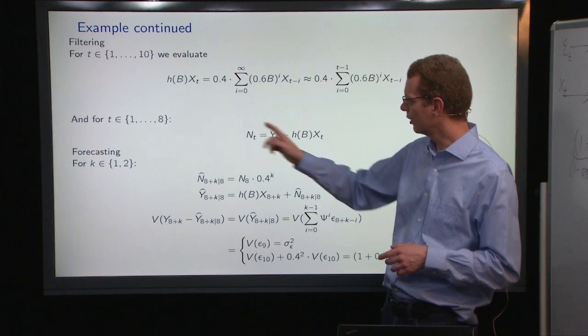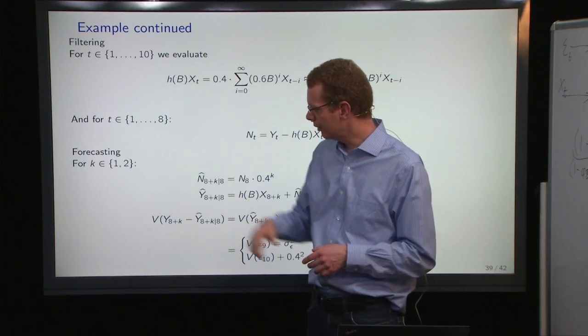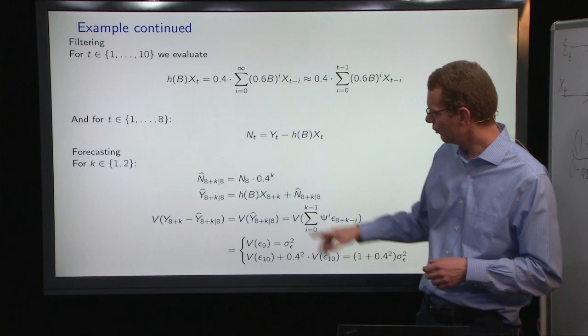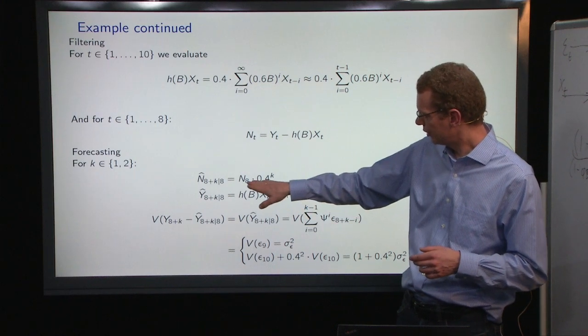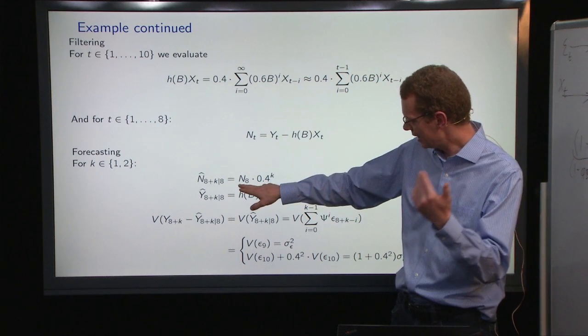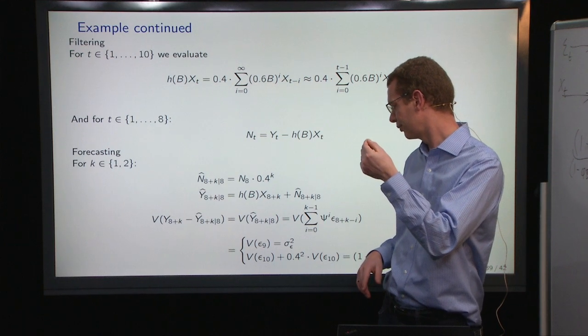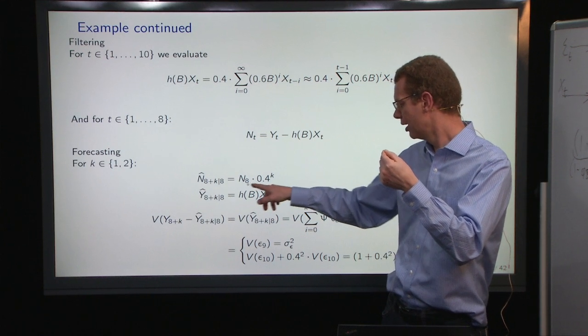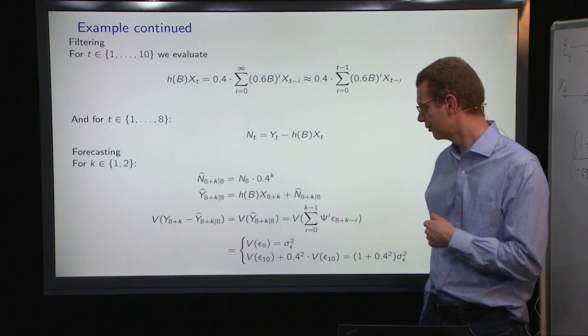Then we can figure out what is NT, calculate that for the eight first time steps, and then we know for an AR-style noise process, we just have to say, the K-step predictions on that is the estimate at time, reference time in this case time eight, times 0.4 to the prediction horizon to the power of that.